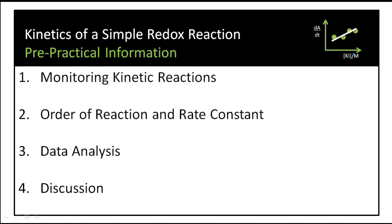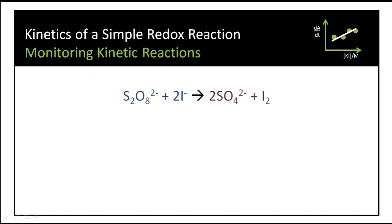In this reaction we have the reaction between persulfate and iodide, and these react to form iodine. In general, when we monitor kinetic reactions we either monitor the rate of disappearance of reactants or the rate of formation of products. By measuring this rate we can get an idea of how fast the reaction is proceeding.